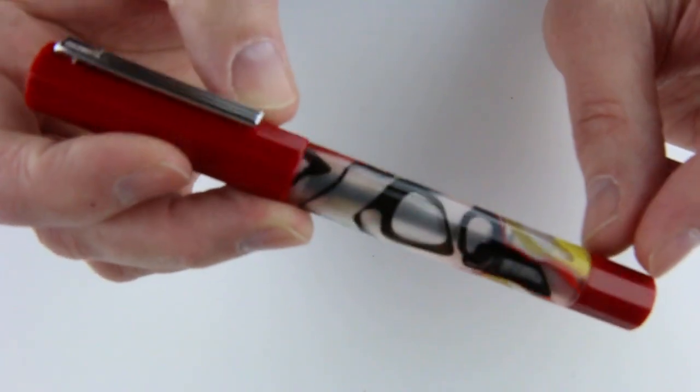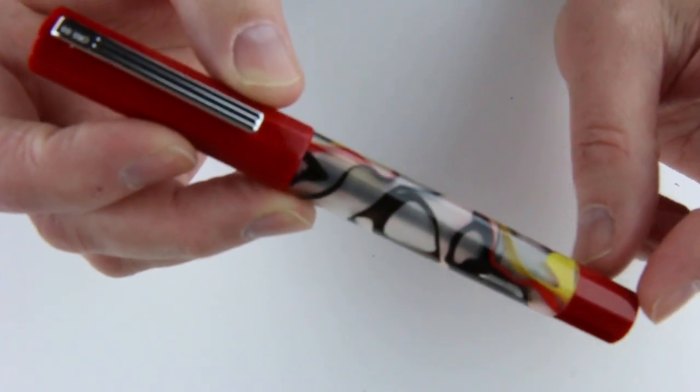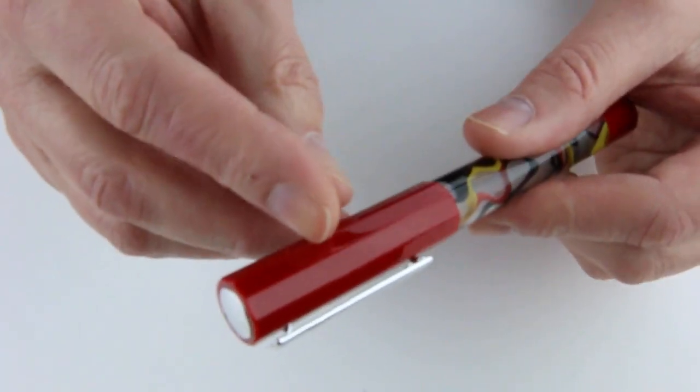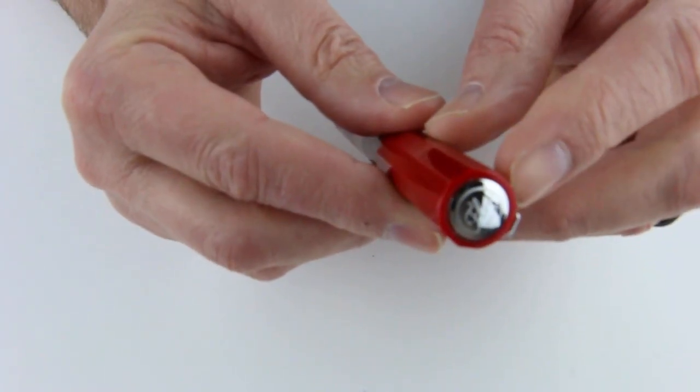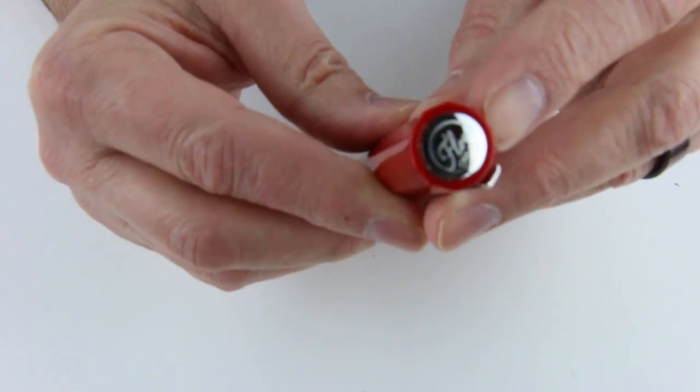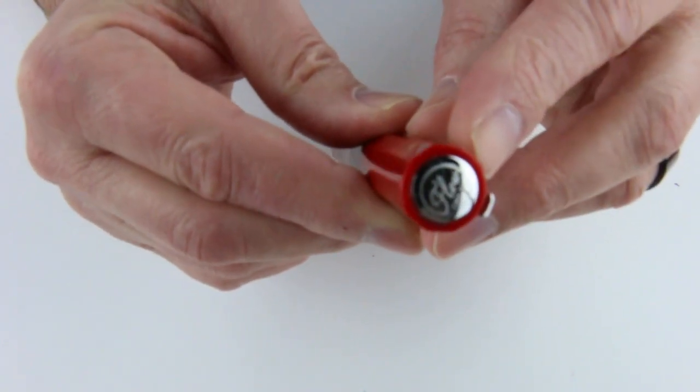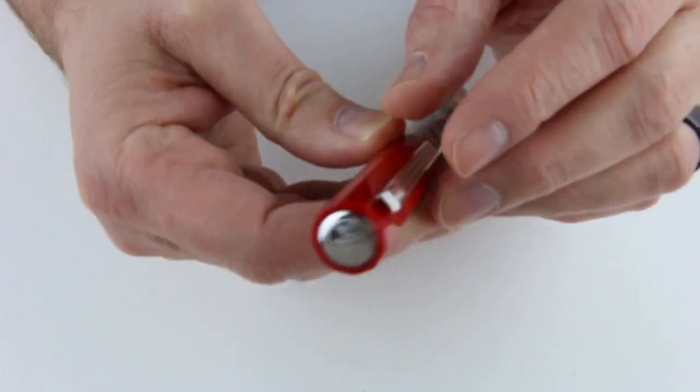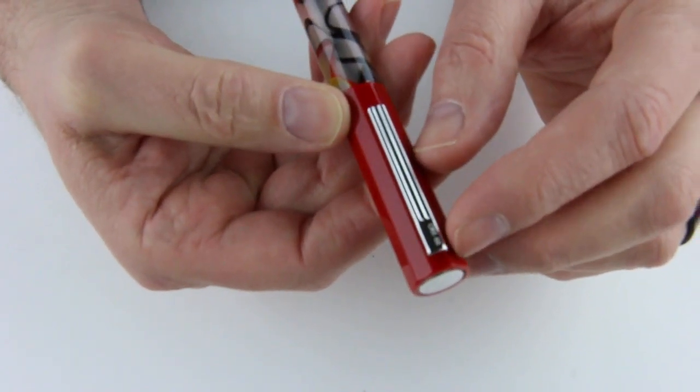Red resin here on the knob on the end as well as the cap that matches. And then a silver-colored medallion on the top of the cap with the Opus 88 logo. Plain basic clip.